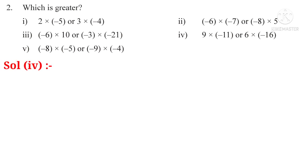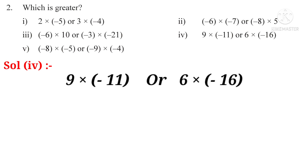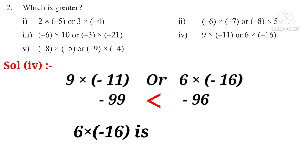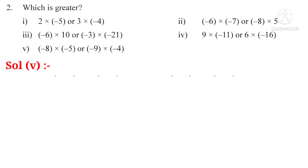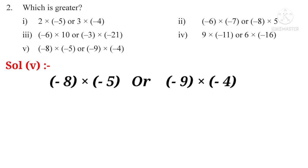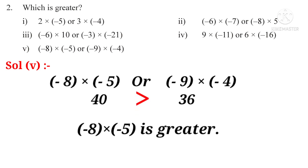Solution 4: 9 into minus 11, or 6 into minus 16. 9 into minus 11 equals minus 99. 6 into minus 16 equals minus 96. These numbers are in the order of the number line, so put less than symbol — minus 99 is small and minus 96 is greater, so 6 into minus 16 is greater. Solution 5: minus 8 into minus 5, or minus 9 into minus 4. Minus 8 into minus 5 equals positive 40. Minus 9 into minus 4 equals positive 36. 40 is greater than 36, so minus 8 into minus 5 is greater.